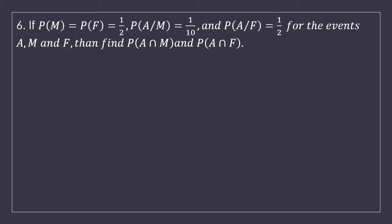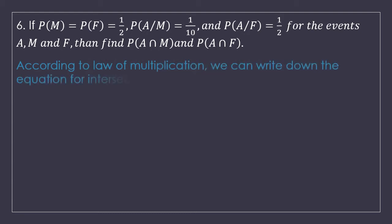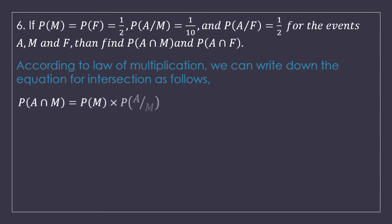If we apply the law of multiplication of probabilities — that is the formula for the intersection — P(A intersection M) will be P(M) multiplied by P(A given M). This is the law of multiplication of probabilities. From the question, M is given and A given M is also there. So if we multiply these two probabilities, we will get the intersection of events.